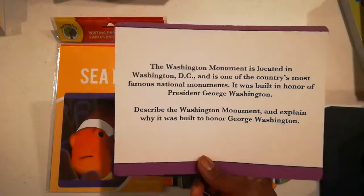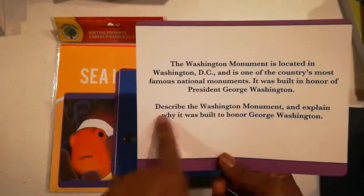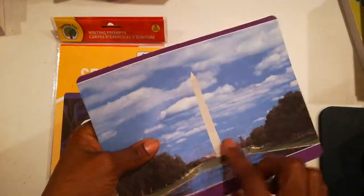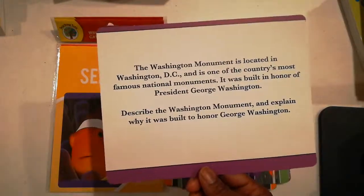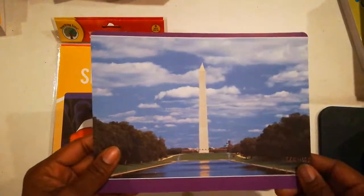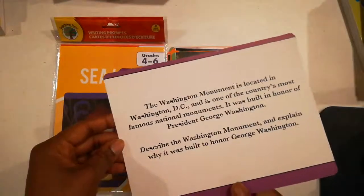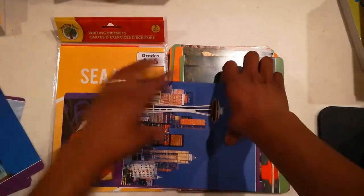I wouldn't do it exactly as written — I'd just tell them, 'Hey, explain to me about the monument.' I'd also ask them what their thoughts are on it, and have them find more information: research this monument, research George Washington, and tell me your thoughts on why it was built. Is there any side information not taught in the books? Any journals or anything that builds on this even more? Then we have the Statue of Liberty, the White House, and all of these different cards.